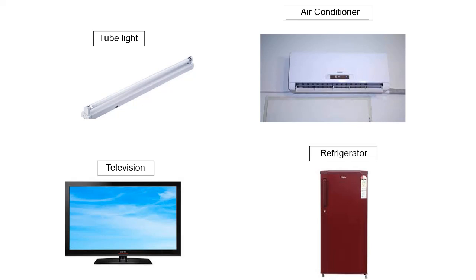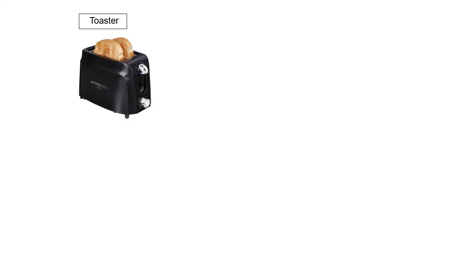The next electrical appliance is the refrigerator. It is used to keep food fresh for a longer time. This is a toaster. It is a kitchen appliance which is used to heat bread to make it crispy like a toast.